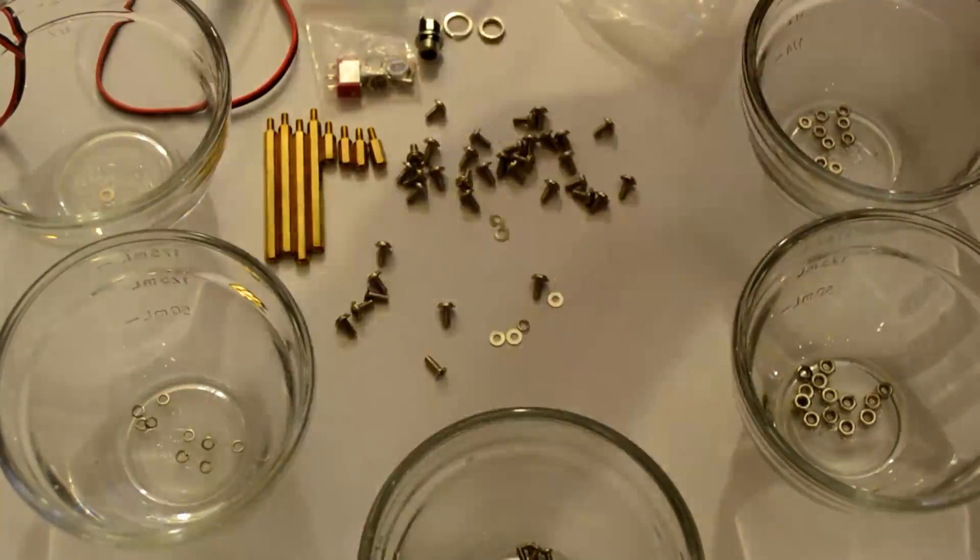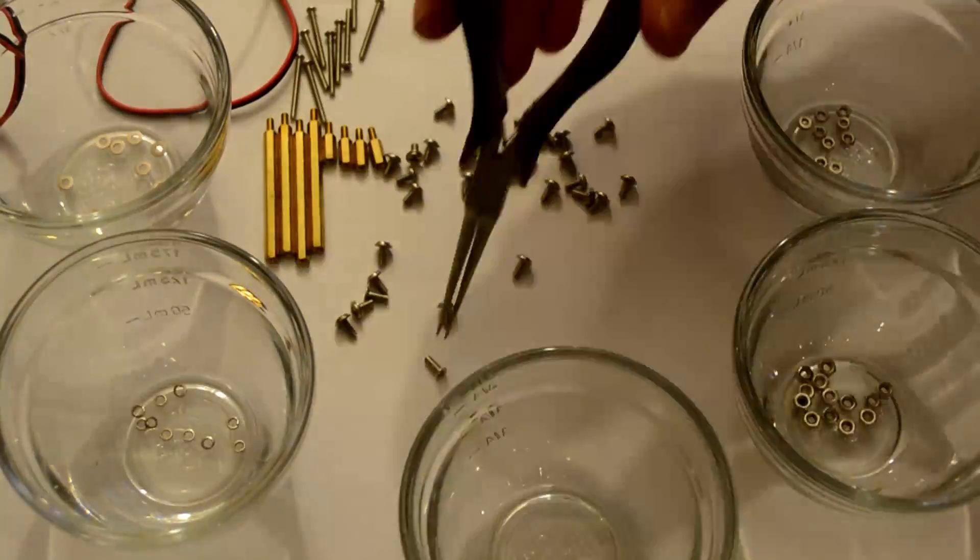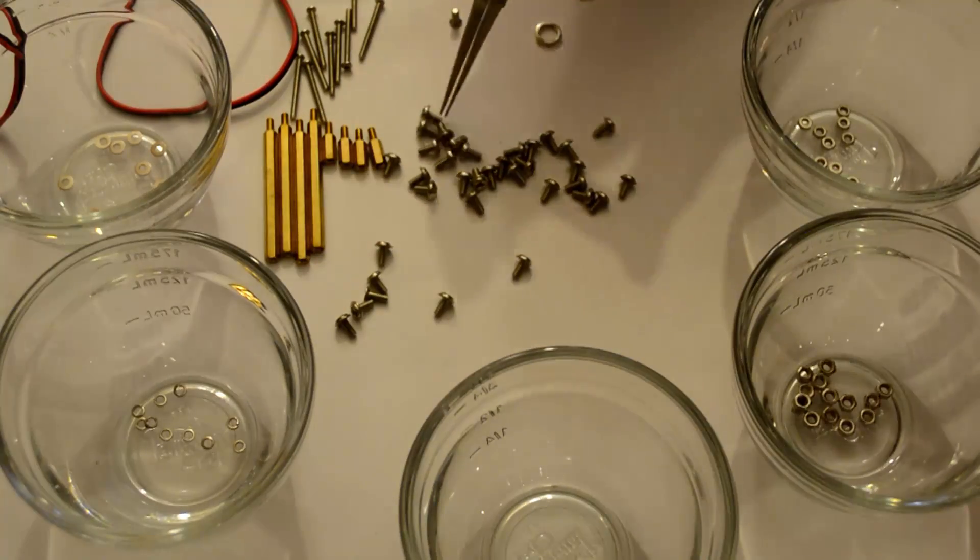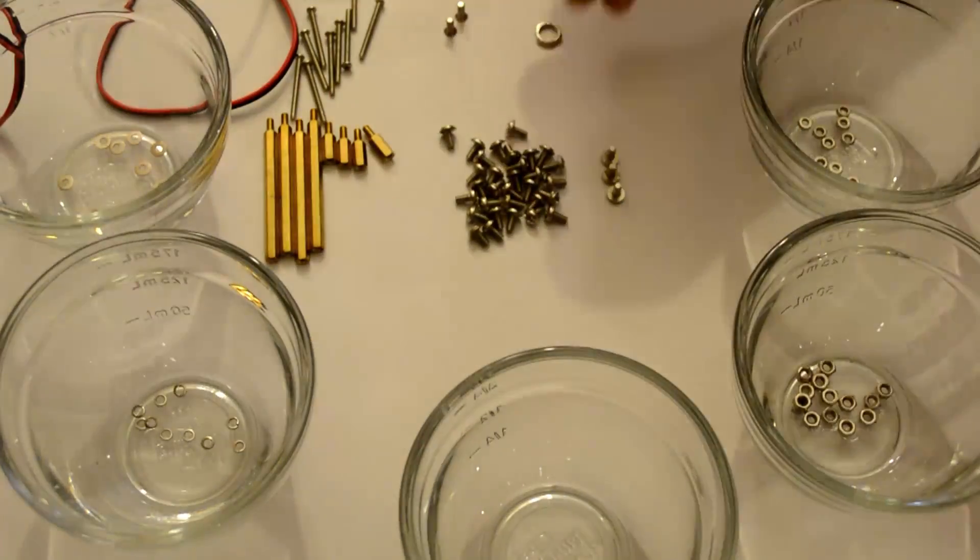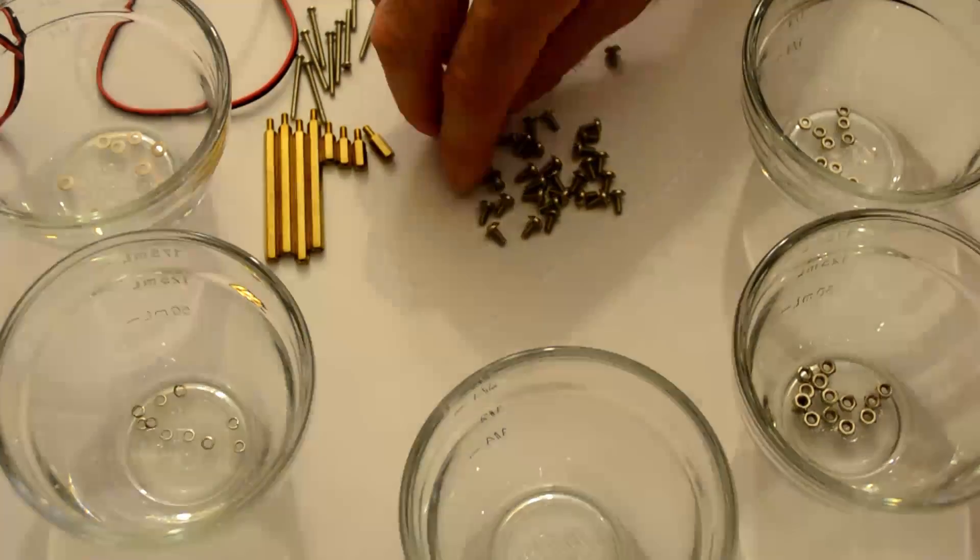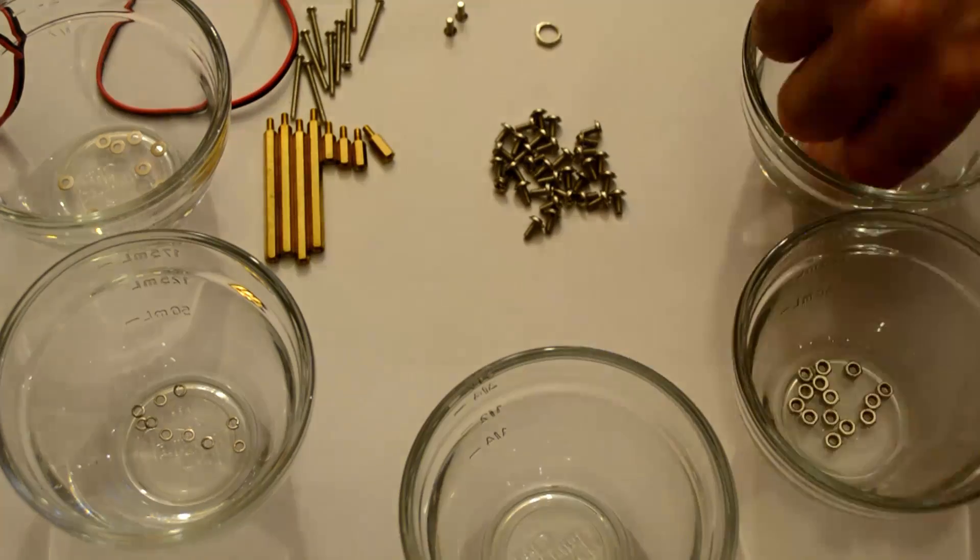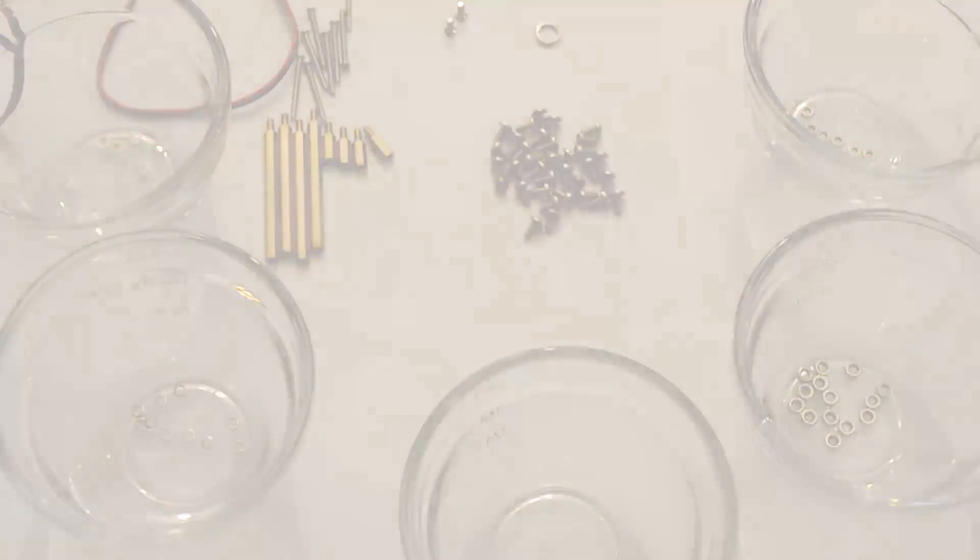All the screws are the exact same except for two, and those are pretty easy to distinguish because they have flush heads, and you'll actually use those for mounting the battery case. I used three bowls for the different types of bolts and then two for the different types of washers, and it worked out pretty good.